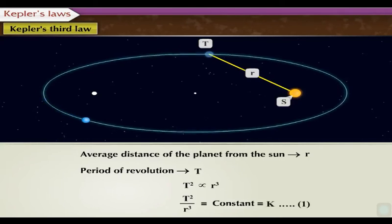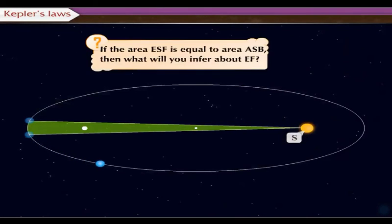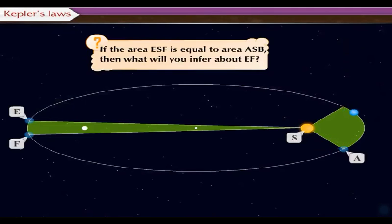After studying about ellipse and Kepler's laws, now it's time for a question-answer session. As shown in the figure, if the area ESF is equal to area ASB, then what will you infer about EF?